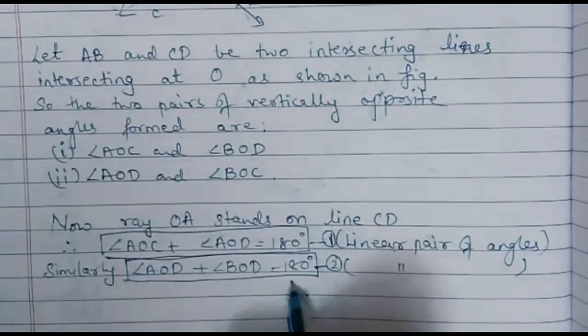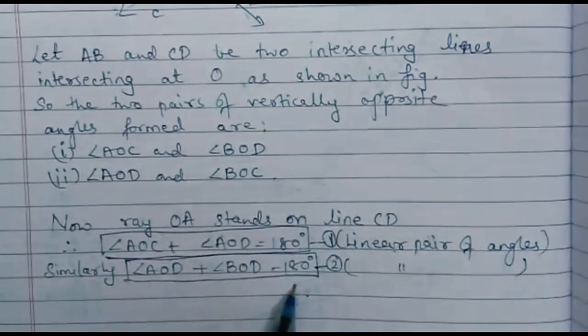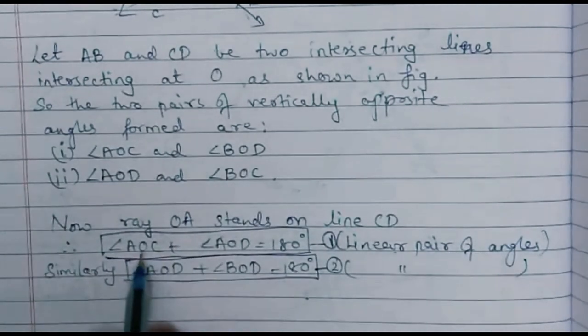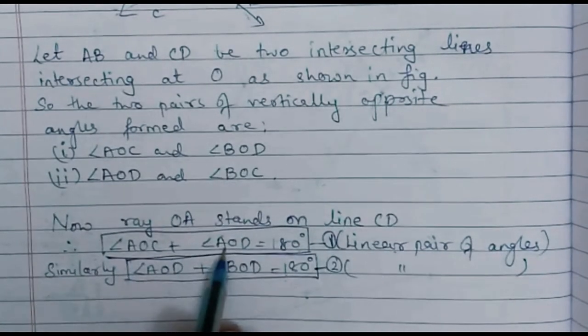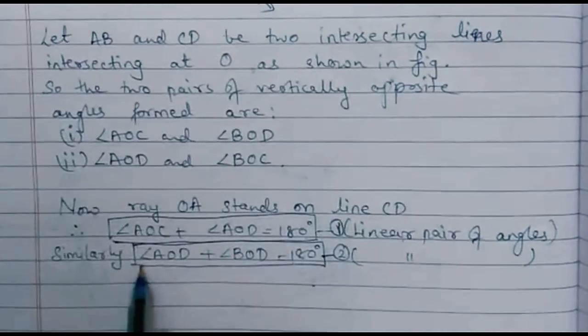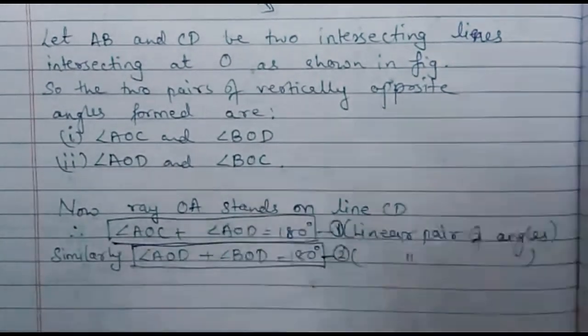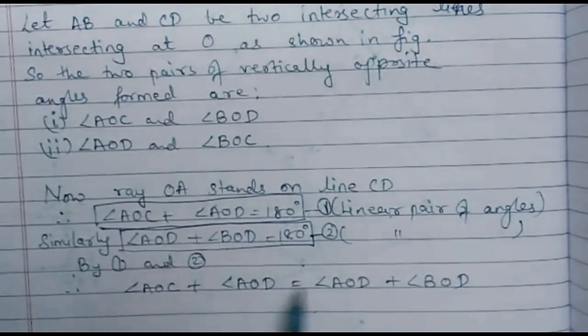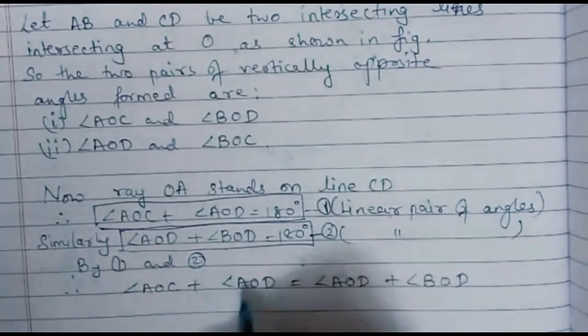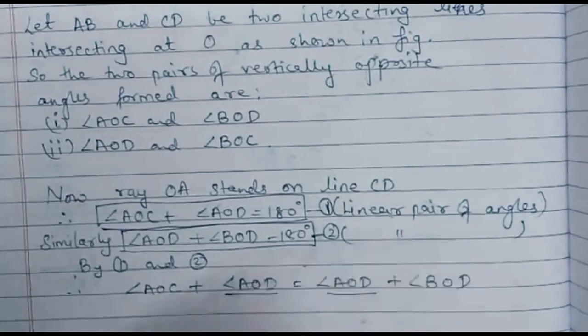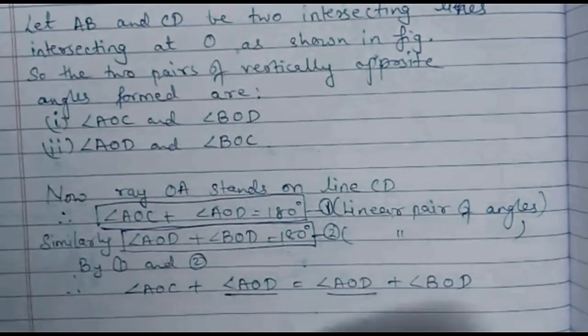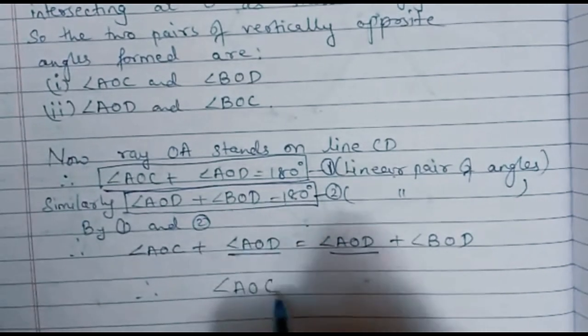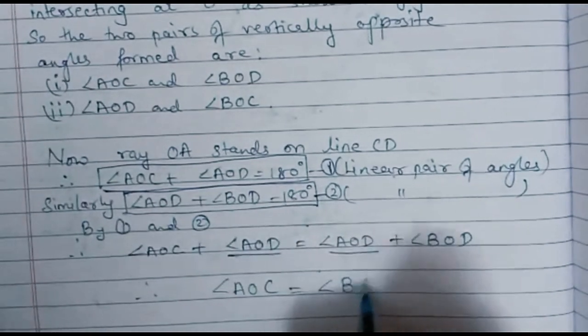Now if we compare both the results, their total is 180 degrees. So we can equalize the left hand side. That means I will write angle AOC plus angle AOD is equal to angle AOD plus angle BOD. Right, so I have written by 1 and 2 we can equalize the left hand side. Now as this term is common it will be cancelled, and so we got to prove this thing: angle AOC is equal to angle BOD.